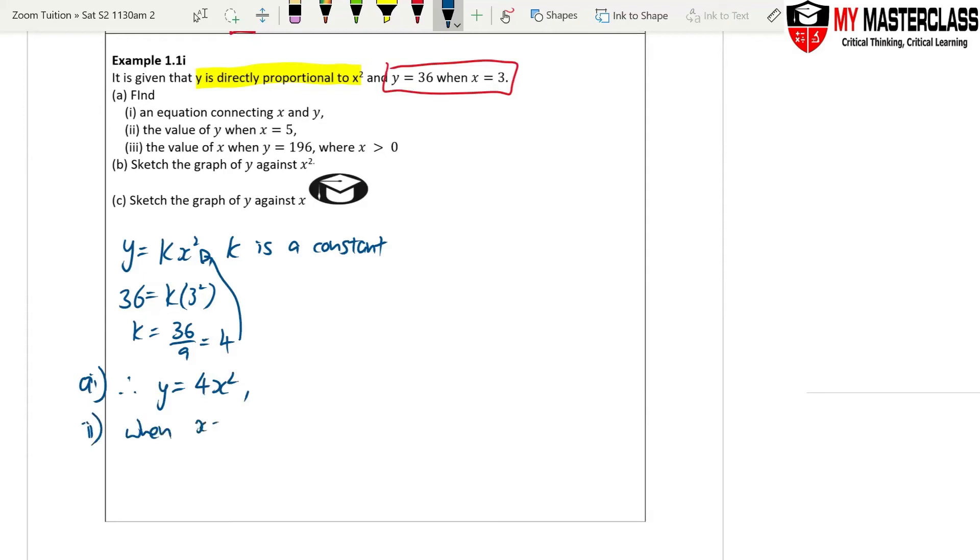So for part 2, when x equals 5, y equals 4 times 5 square, and that equals 100.